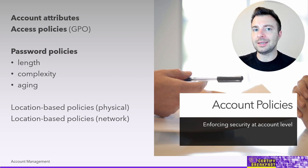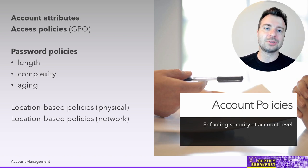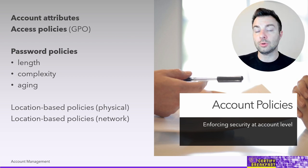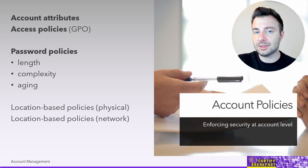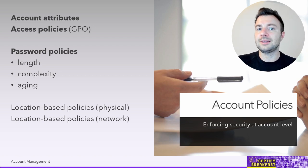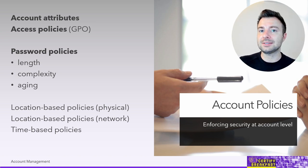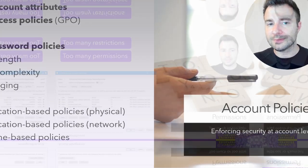Additional security controls can enrich access policies using location information — is the user inside the company premises, within a branch, or connecting over a VPN? We can even correlate IP address information to a geographic IP database to determine the region or country the user is connecting from. We can also have time-based policies, such as the time of day or day of the week when users are allowed to access specific resources, or even how long a specific connection event is allowed to last.